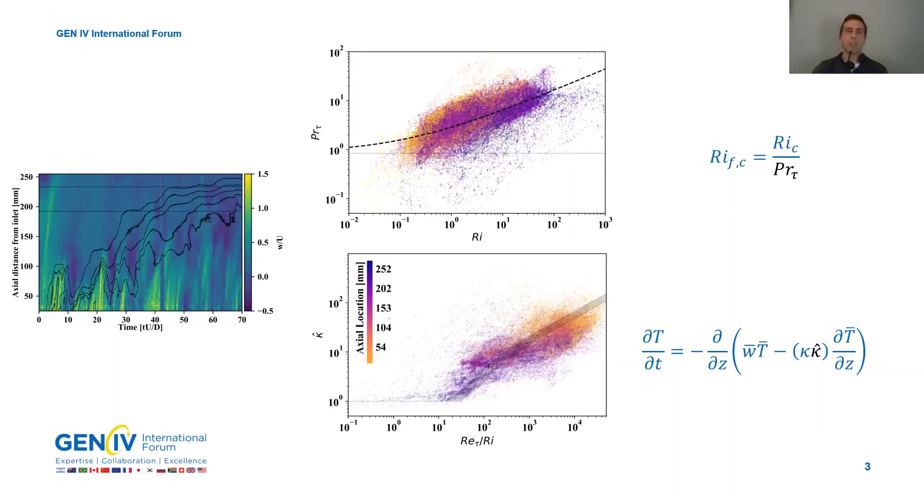This is extremely important in the estimation of the turbulence quantities that we see in the middle. Using velocity, temperature, their co-correlation and their gradients, we can construct important parameters. The first on top is the turbulent Prandtl number, whose behavior is unique in liquid metal flows.